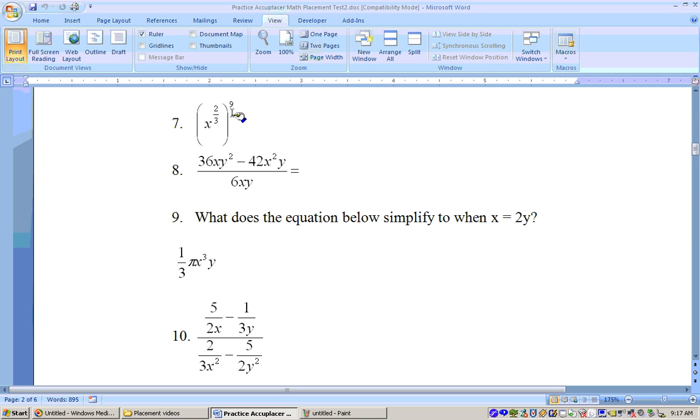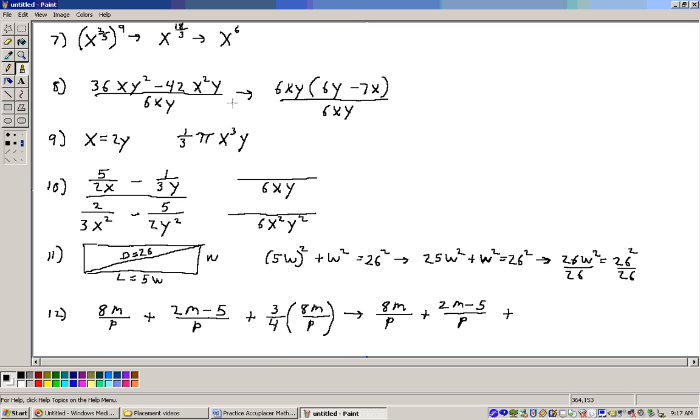2/3 times 9, this is the same as 9 over 1, so that would be 18/3, and 18/3 is 6. So it's the same as x to the 6th power, right there.